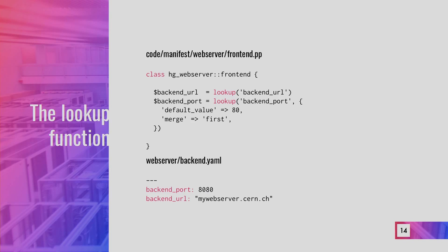The second example is for the lookup function. We have a Hiera file defining two variables — 'backend_port' and 'backend_url' — not fully qualified. In the frontend sub-host group code, we do two lookups: the first specifies only the key, 'backend_url'. The second specifies the key plus a hash, where we set a default value of 80 and a merge strategy of 'first'.